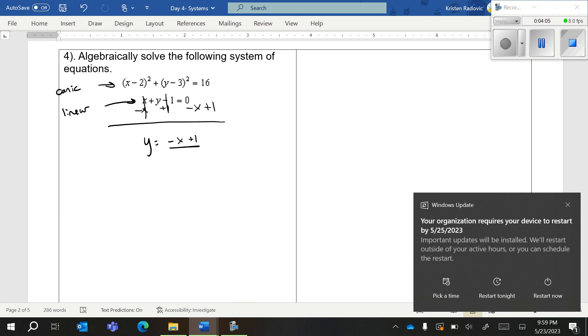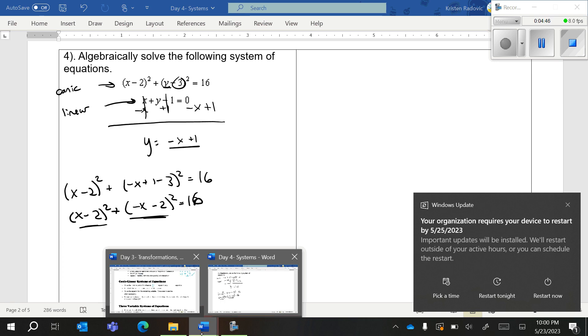I'm going to take that equation now and plug it in to the hard equation. Now I'm going to have x minus 2 squared plus negative x plus 1 minus 3 squared equals 16. From there you would have to simplify. 1 minus 3 is negative 2, and then you would do box method, second box method, combine like terms, set it equal to 0, and you have to factor.